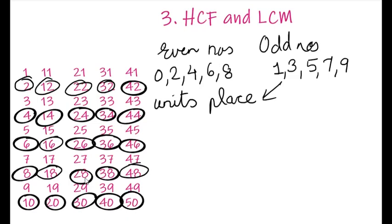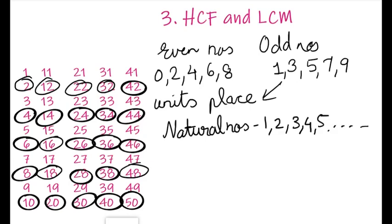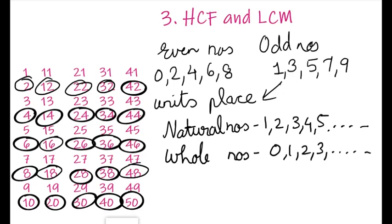Now let us recall some other types of numbers. They are natural numbers. What are natural numbers? The numbers which start from 1 are called as natural numbers: 1, 2, 3, 4, 5, and so on.